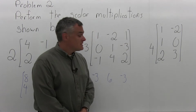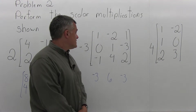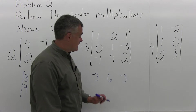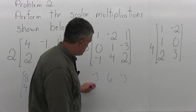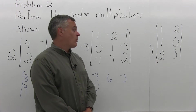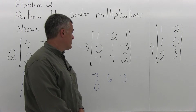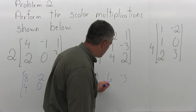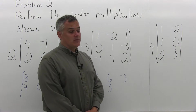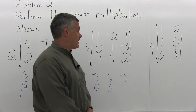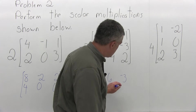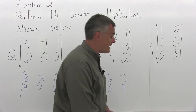Coming across the middle row, you have a 0 in the leftmost position, so that would be negative 3 times 0, which is 0. Then in the centermost position of the matrix is a 1, so negative 3 times 1 is negative 3. And then in the far right position of the middle row, you have a negative 3, so you'd have negative 3 times another negative 3, which would make positive 9.